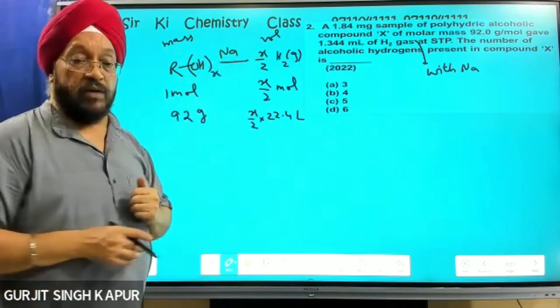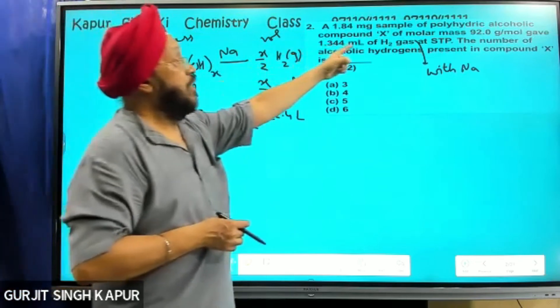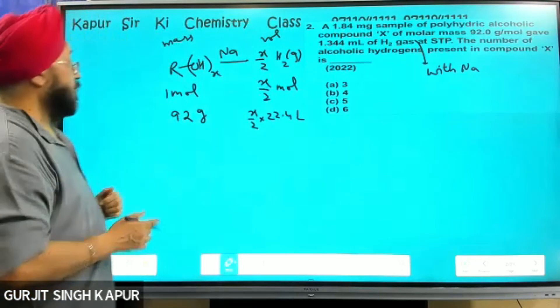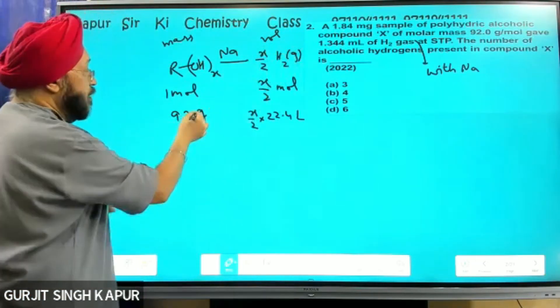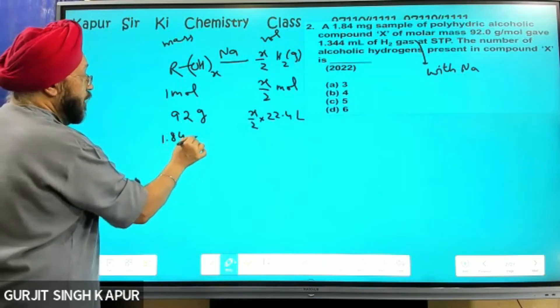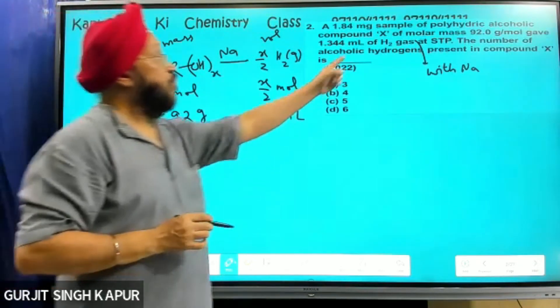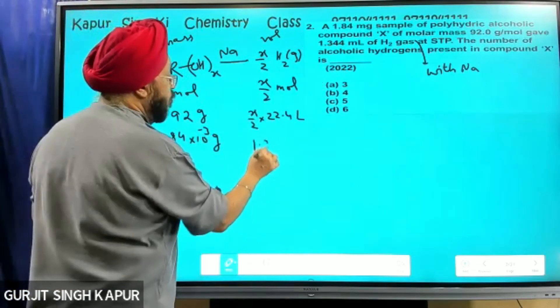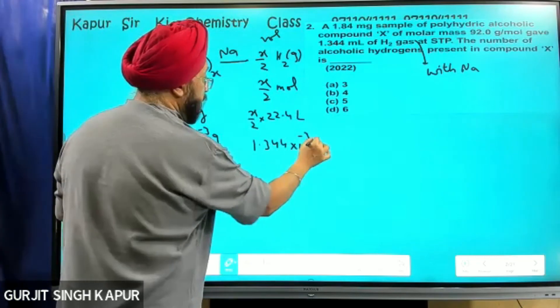1 mole is under STP equation. Volume-wise, 1.344 times 10 to the power minus 3 liters.